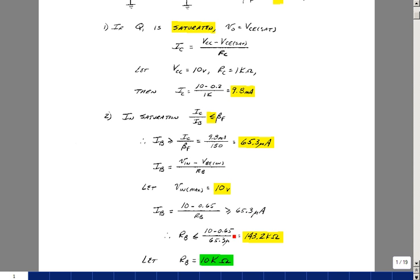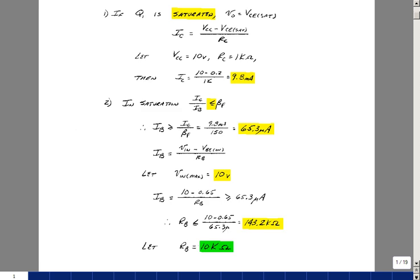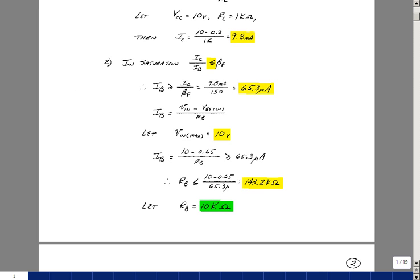Bringing R sub b over here, we need to be less than the ratio of 10 minus 0.65 divided by 65.3, that's 143k ohms. If we pick something much smaller than that, we will definitely force our transistor into saturation. So let's use a 10k resistor for R sub b.